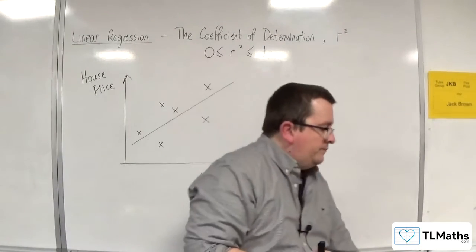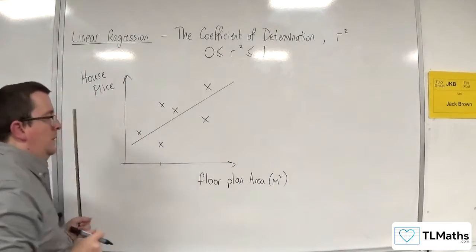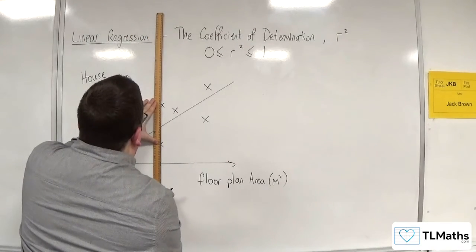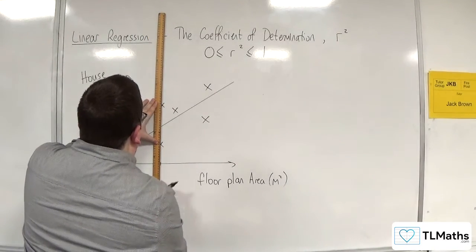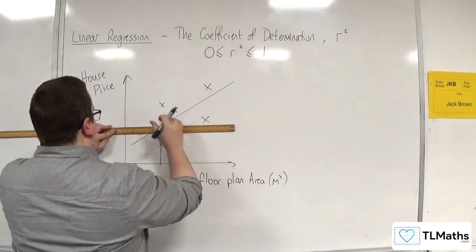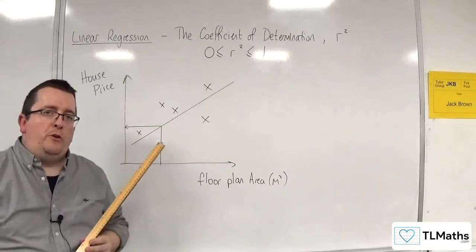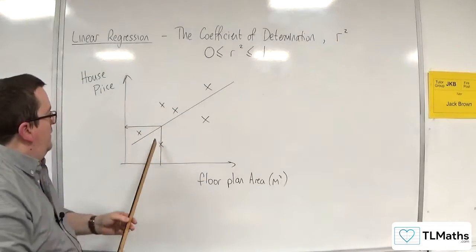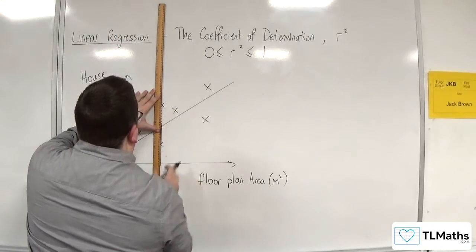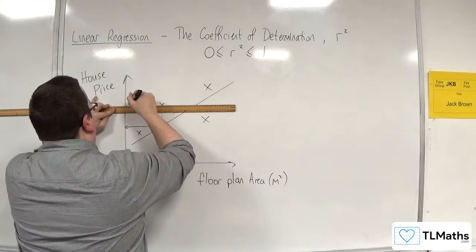Notice how, if I have this floor plan area, then I can go up to my line and read off the house price. But of course, my model is not perfect. Because not only have I gone through that data point, there is also this data point right up here that has a higher house price.